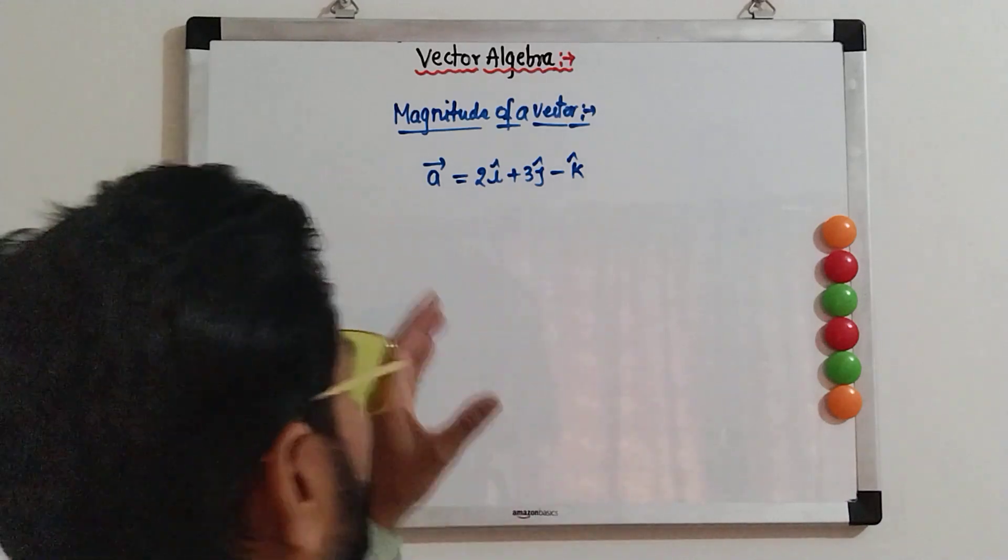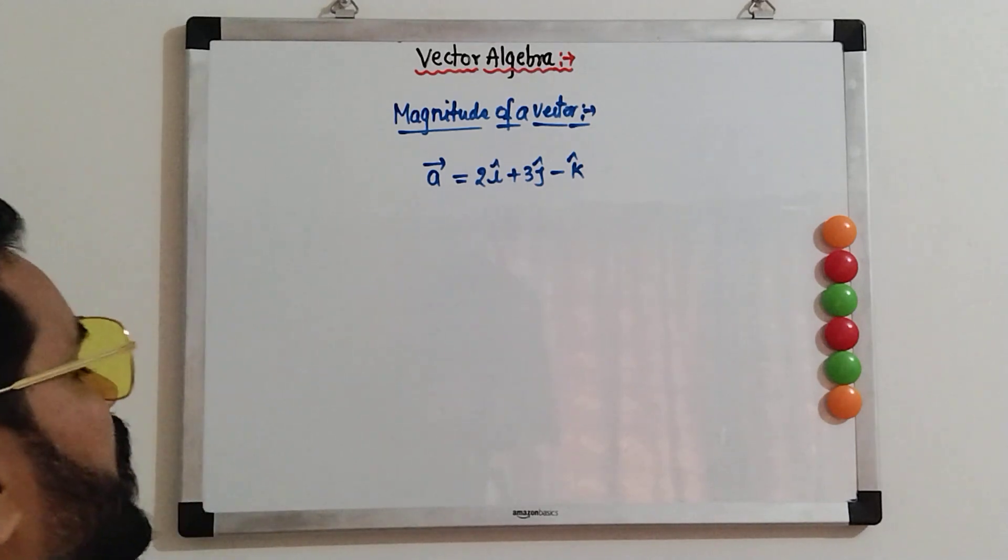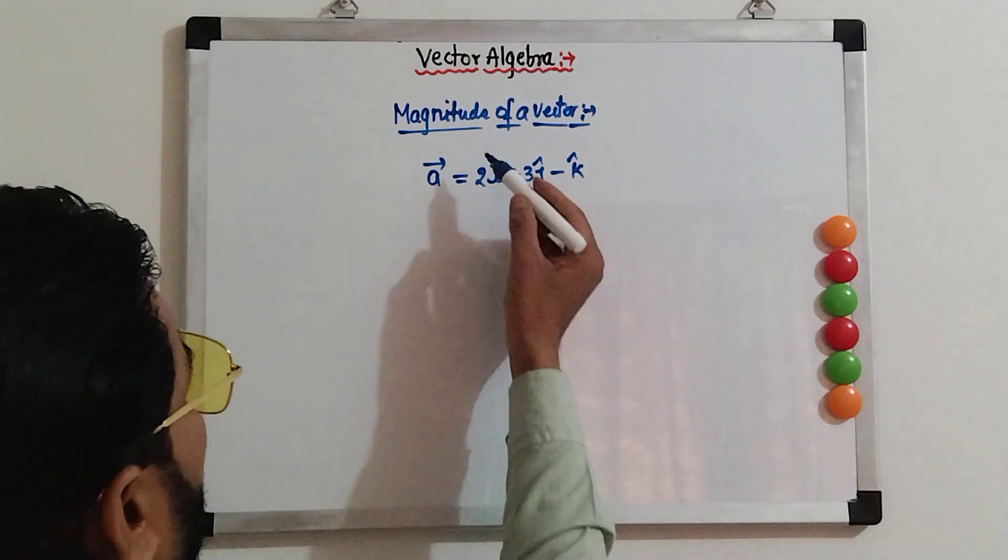So, vector is written in the component form. This is the component form. Component form means in the form of i, j and k. Three directional.